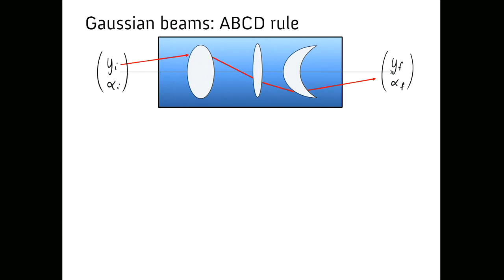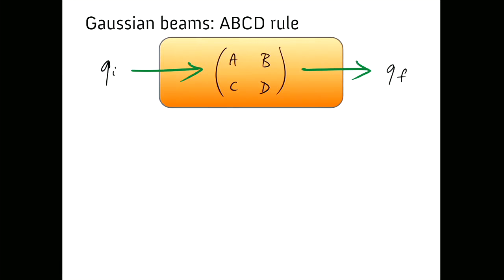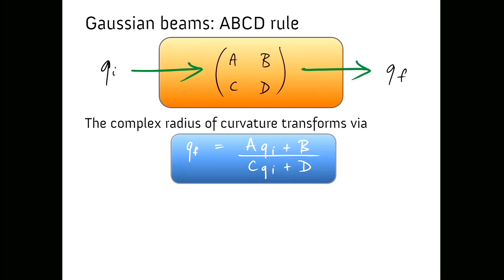When we studied ray optics, we used a matrix formalism to transform a ray through an optical system. In Gaussian beam theory, we can use the same matrices to transform the complex radius of curvature q. The catch is that q is a complex number — it doesn't transform directly by matrix multiplication. So instead we use the ABCD rule: given q_i before the system, we find q_f after it using an algebraic expression with matrix elements A, B, C, D.